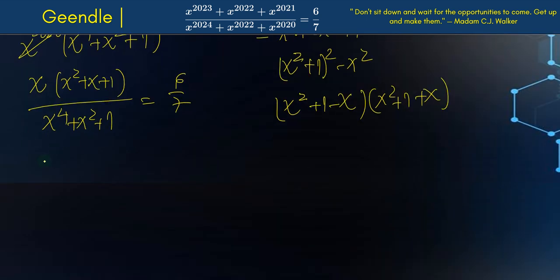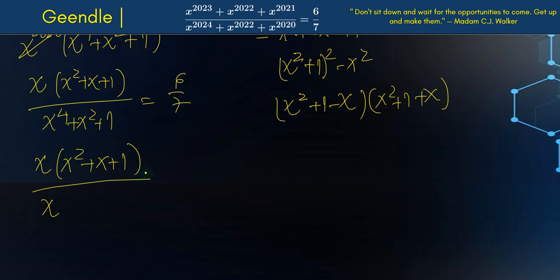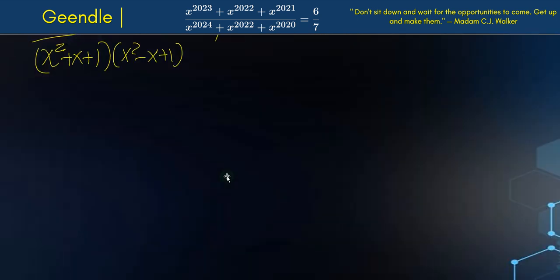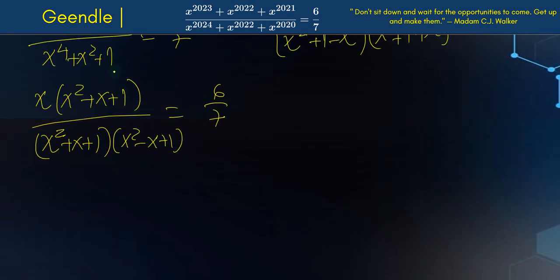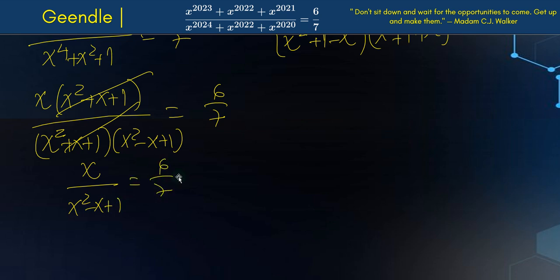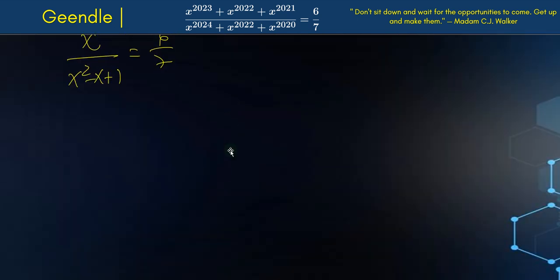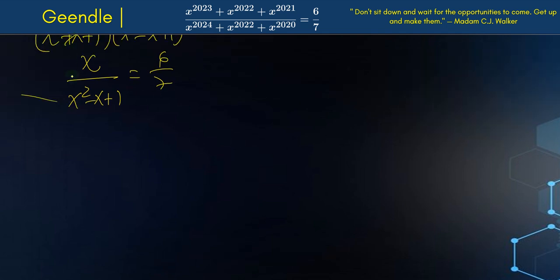Replacing the denominator, we have x times (x squared plus x plus 1) all over (x squared plus x plus 1) times (x squared minus x plus 1), which equals 6 over 7. The (x squared plus x plus 1) terms cancel, leaving us with x over (x squared minus x plus 1) equals 6 over 7.